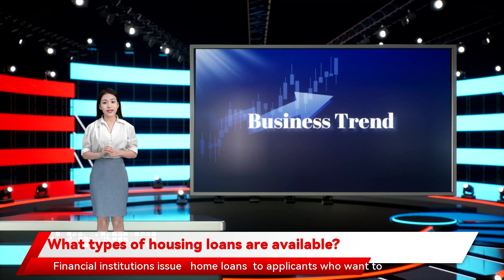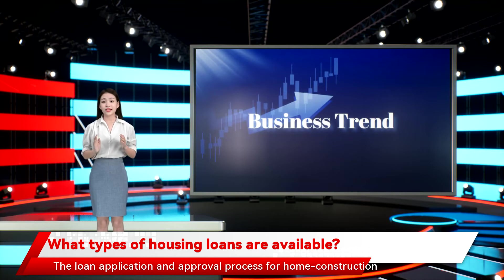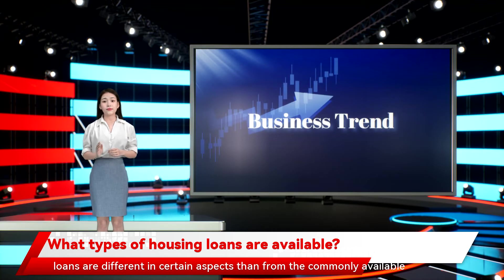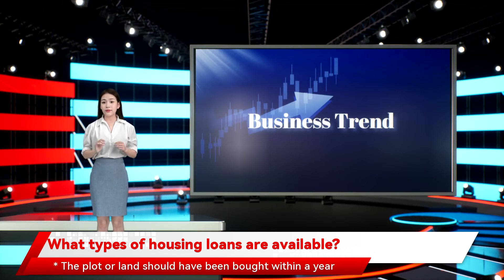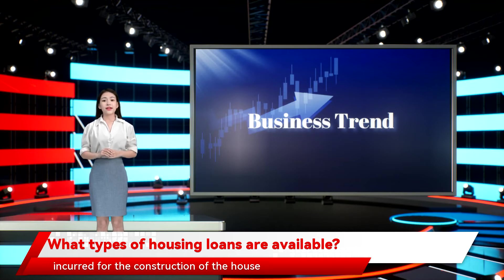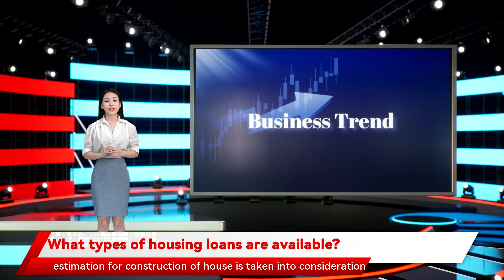Home Construction Loan: Financial institutions issue home loans to applicants who want to construct a house on a plot owned or co-owned by them. The loan application and approval process for home construction loans are different in certain aspects from the commonly available housing loan. This includes: the plot or land should have been bought within a year, the borrower has to make a rough estimate of the construction cost, and if the cost of the plot is not included in the loan amount, only the estimation for construction of the house is taken into consideration.